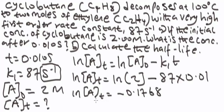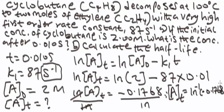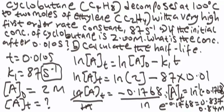To make A_t the subject of the formula, divide both sides by ln, so A_t = e to the power of minus 0.1768. When you punch it in the calculator, you get A_t = 0.84 mol (to two decimal places). This will be the final concentration.